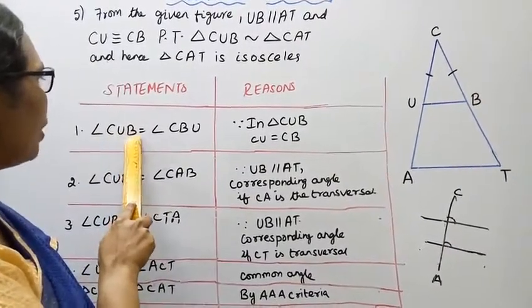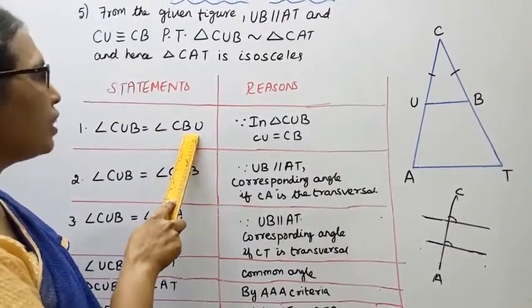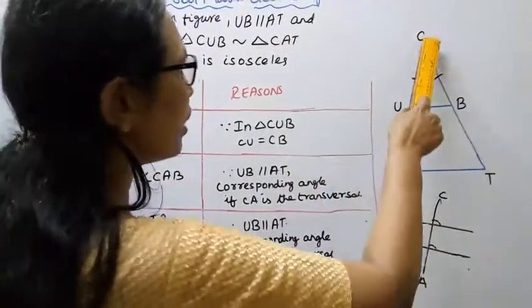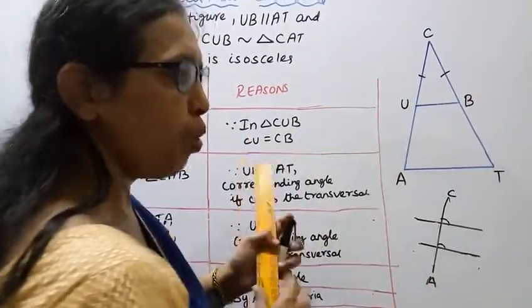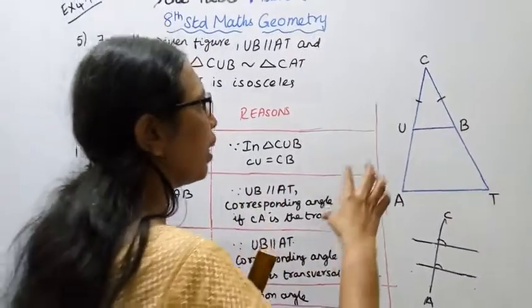In triangle CUB, since CU is equal to CB, angle CUB is equal to angle CBU — because the sides are equal, the base angles are equal.